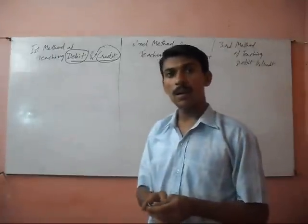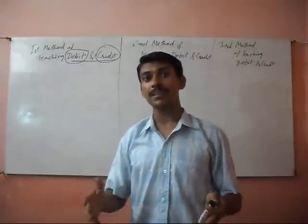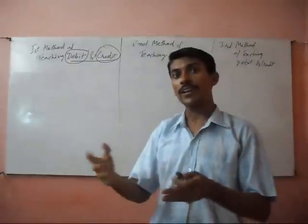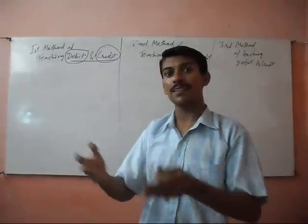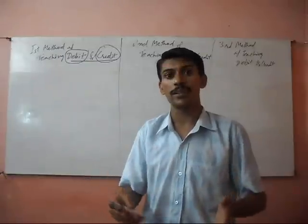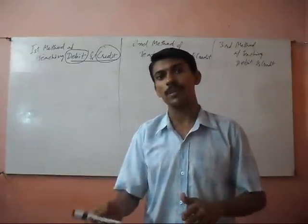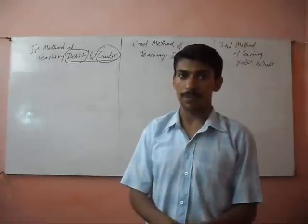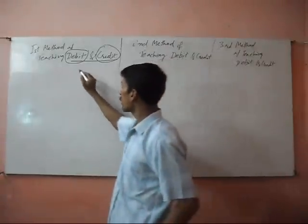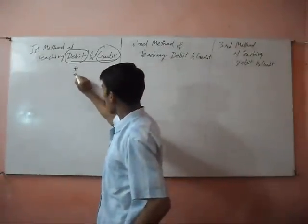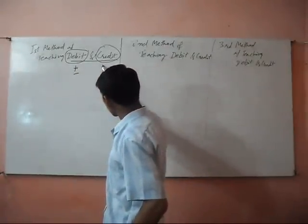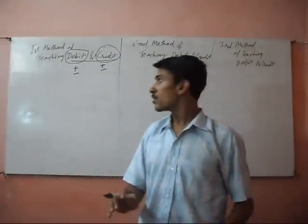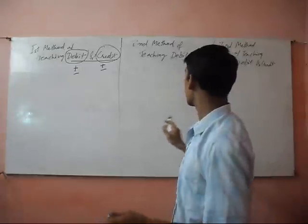Debit may be an increase for any company or a decrease for any other company. And credit may also increase for any company and decrease for any other company. So, it is plus or minus. There are three methods to teach it.